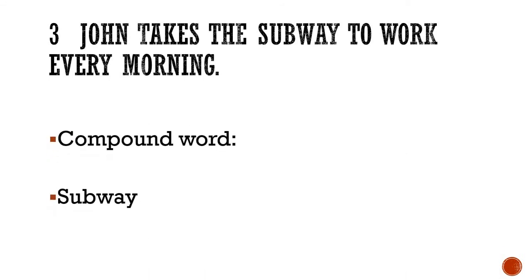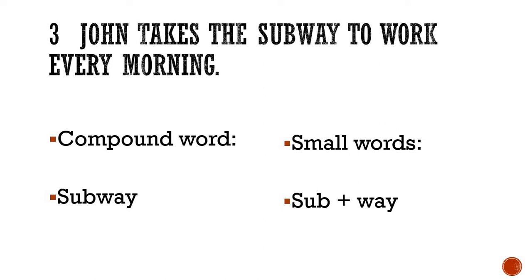Moving on to number three: 'John takes the subway to work every morning.' The student with a sharp mind will be able to find the compound word easily. The compound word is 'subway' — it is a kind of underground path to cross a busy road. It is formed by adding sub plus way to get subway. I hope students are writing this answer properly so that when you send it to your teachers, we will be able to check your answers and write your name among the good and regular students.